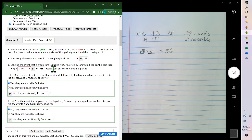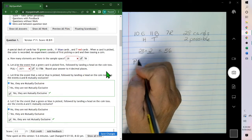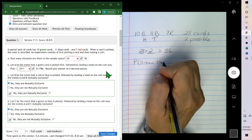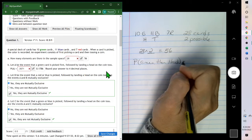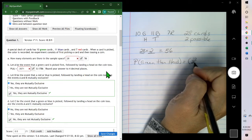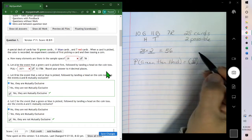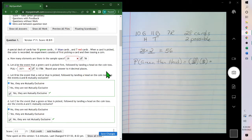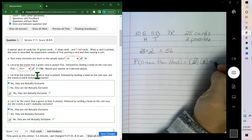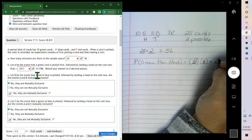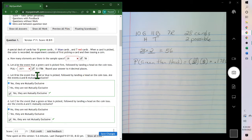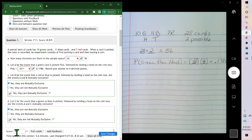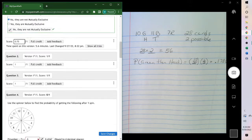Let A be the event of a green card is picked, followed by a head. So the probability of a green card and then a head. Green is 10 out of the 28 and then a head is 1 half. And I think they wanted the decimal. Point 1786.